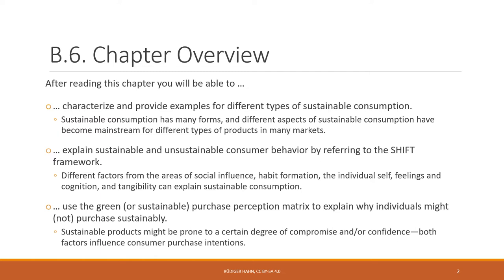You'll be able to use the green perception matrix — or nowadays the sustainable purchase perception matrix — to explain why or why not individuals might purchase sustainably. You'll learn that sustainable products might be prone to certain degrees of compromise or confidence: people may have to make some compromises when consuming more sustainably in some cases but not others, and they might be more or less confident that their choices make a difference.